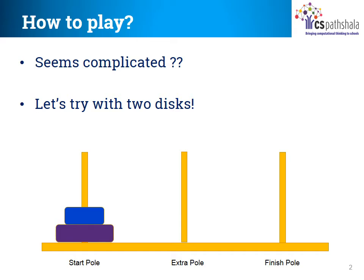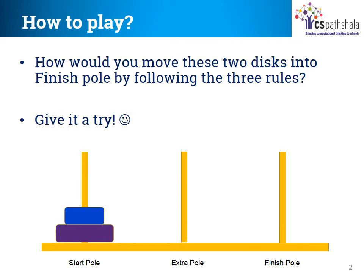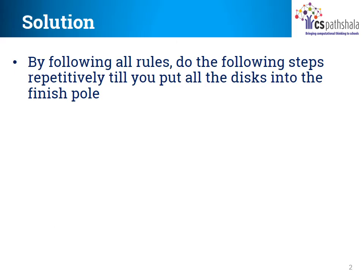Seems complicated? No, it's really not. Let's try the Tower of Hanoi problem using 2 discs, a simple version of the problem to understand in detail. So how would you move these 2 discs from the start pole into the finish pole by following these rules? This is our big task, and as we learnt in the beginning of the lesson, we can solve a big task by breaking it down into smaller and easier tasks. We can solve this by doing only a set of 3 actions over and over again till all the discs from the start pole are put into the finish pole.